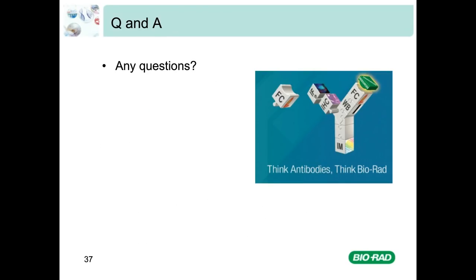Thank you Sebastian for that interesting and informative presentation, and now I'd like to open the Q&A session. For this Q&A session, Sebastian will be joined by Sharon Sanderson, a flow cytometry research associate here at Bio-Rad. Sharon obtained her degree in molecular biology from the University of Manchester, before moving to the Institute of Cancer Research and obtaining a PhD in cell biology from the University of London, with her thesis focusing on angiogenesis. She then moved to the University of Oxford where she worked for 13 years, initially in cancer research before moving into immunology, with her most recent position as a postdoc in an autophagy laboratory working on conventional and imaging flow cytometry. Sharon recently joined the Bio-Rad team as a flow cytometry research associate working on the new ZE5 cell analyzer.